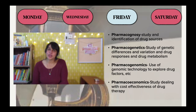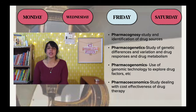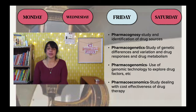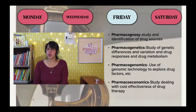Next was pharmacogenomics — it is the application of genomic technology for the benefit of the recipient, and is different from pharmacogenetics. Then I talked about pharmacoeconomics, which is related to cost. It is very important in research because you have to focus on the cost-effectiveness of the whole drug therapy and the drugs being used — whether the whole process is done in a cost-effective manner.